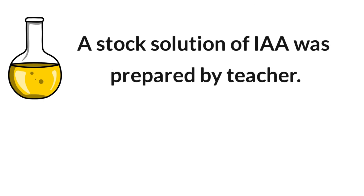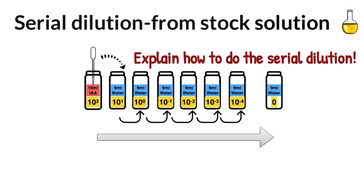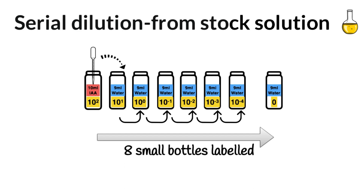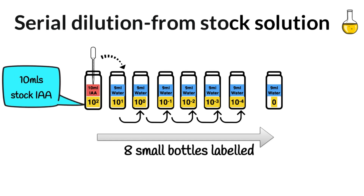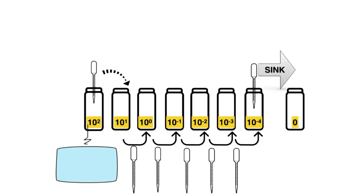The first part of the practical is very important: a stock solution of IAA was prepared by your teacher, and you must remember that the teacher prepared the stock solution. A stock solution means the concentration is known, and this stock solution is going to be diluted downwards — a serial dilution will take place, gradually making it more and more dilute. You could be examined on how you did the serial dilution. Get eight small bottles and label them. Into the first bottle place 10 mls of the stock solution, and into all the others 9 mls of distilled water. Then take 1 ml from the stock solution with a clean pipette and transfer it into the second bottle and mix it.